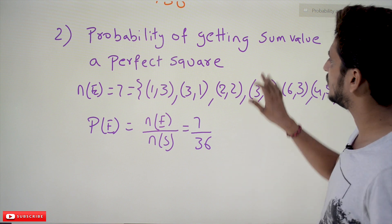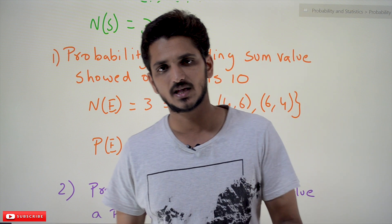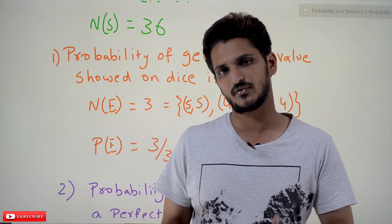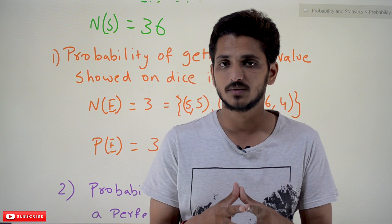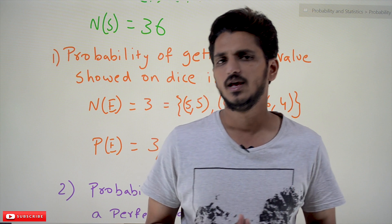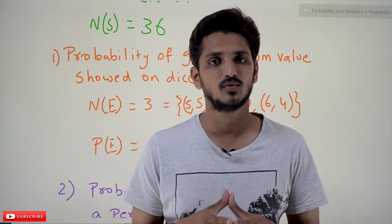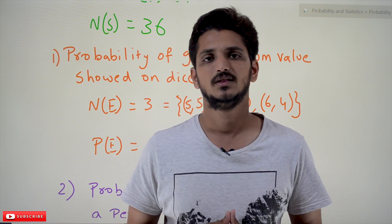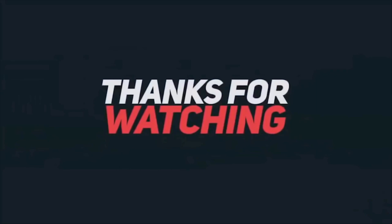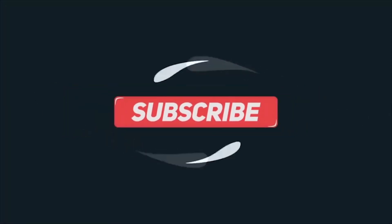This is how we find the probability value for the given events. In our next class, we are going to do some more complex examples, and slowly we will move into different conditions and conditional probabilities. Hope you understand the basics of probability and how to find the probability. If you have any questions, please post them in the comment section below. Thanks for watching. Please subscribe to our channel and press the bell icon for the latest updates.